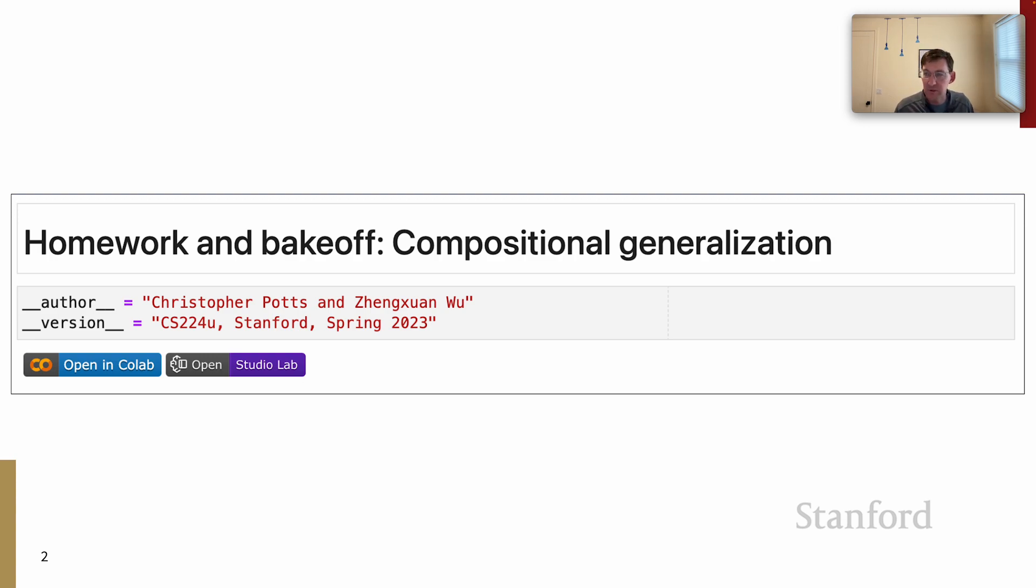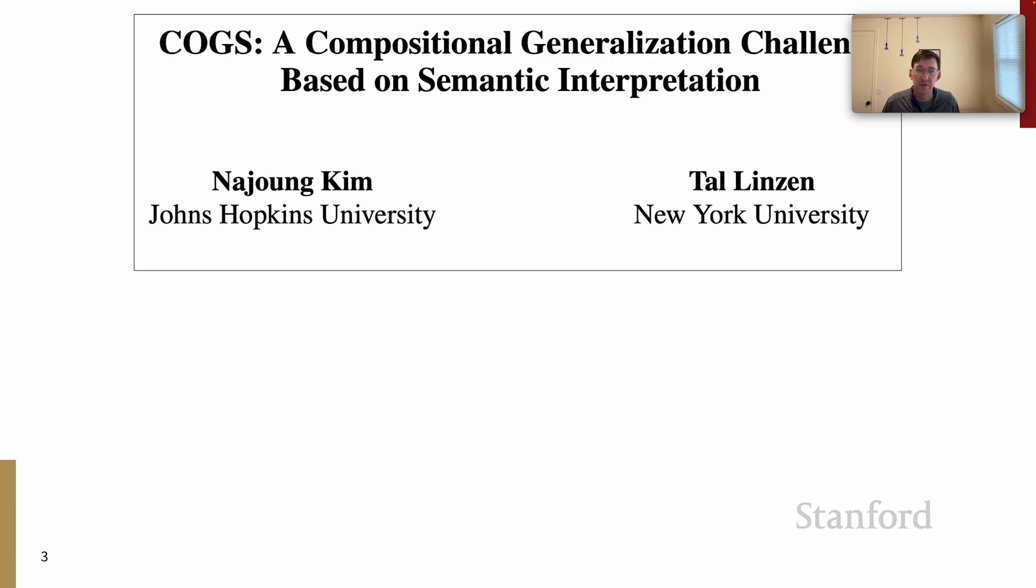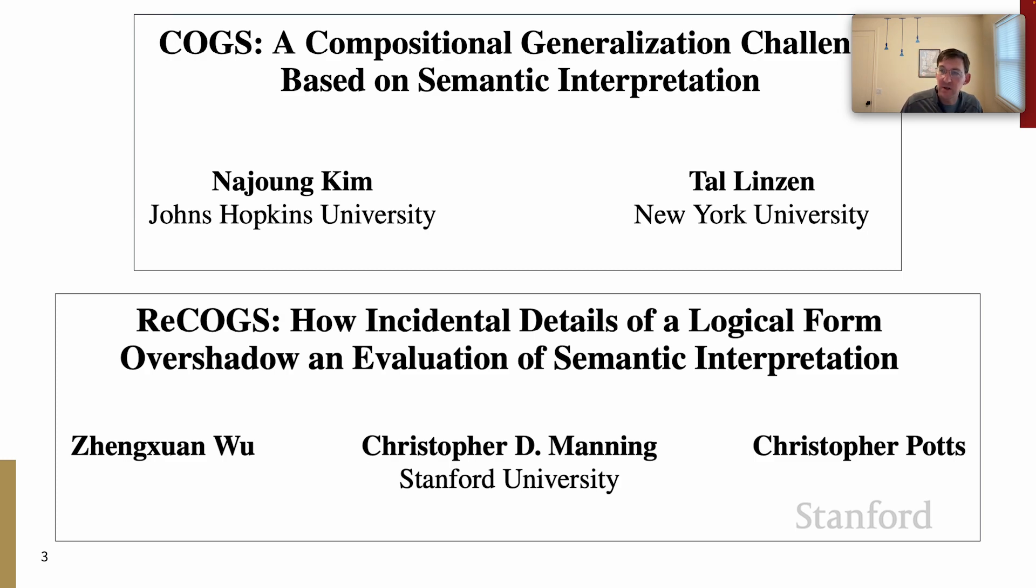This is a favorite topic of mine. This is our attempt to really probe deeply to see whether models have learned to systematically interpret natural language. The starting point for the work is the COGS paper and the associated benchmark from Kim and Linson. We're actually going to work with a modification of COGS that we call ReCOGS. This is recent work that we released, and it simply attempts to address some of the limitations that we perceive in the original COGS benchmark while nonetheless adopting the core insights and core agenda that COGS set.